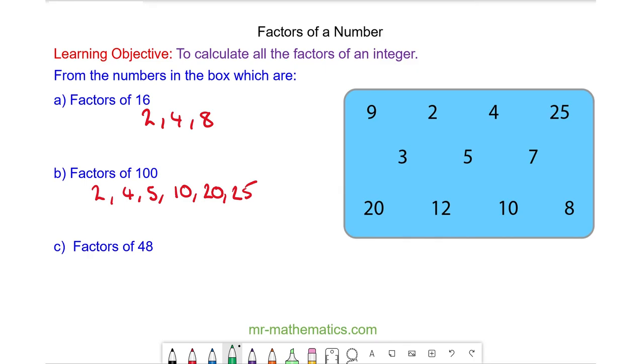And for question C. We have 2 times 24, 4 times 12, 3 times 16, 12 times 4 and 8 times 6.